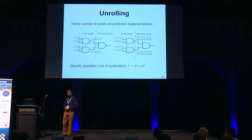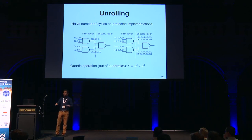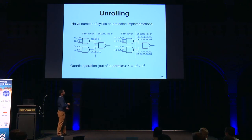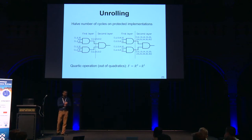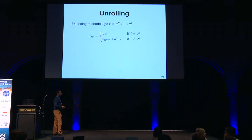If we implement two first-order sharing schemes in both layers, every output of the second layer breaks non-completeness as TI requires. The fix is to implement a second-order sharing scheme in the first layer and a first-order sharing scheme in the second layer. This way, no output at the end fails non-completeness. This works because, due to the two-input nature of an AND gate, the outputs of the first layer need twice as much security as the outputs of the second layer. We extend and generalize this methodology for higher orders and higher algebraic degrees.